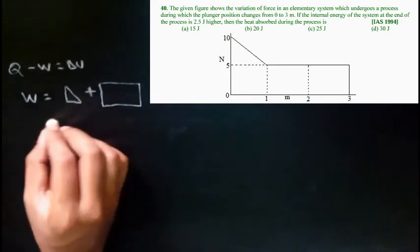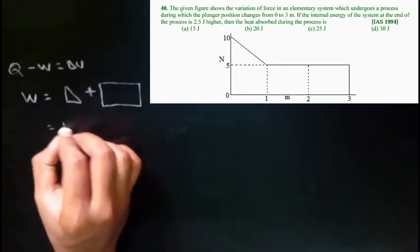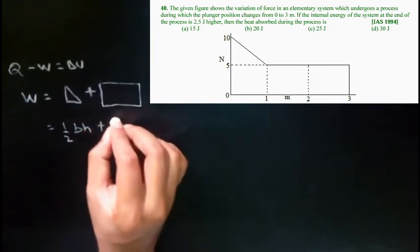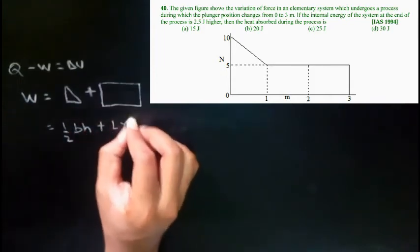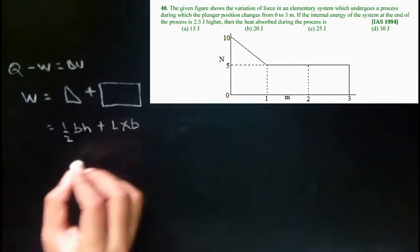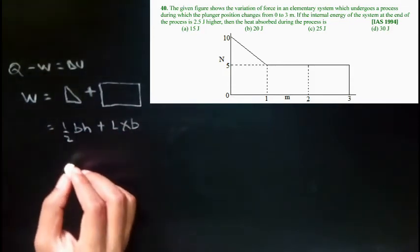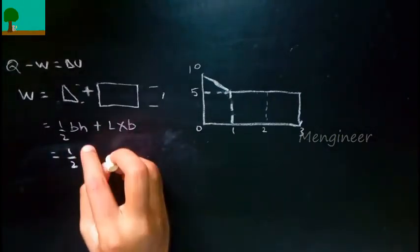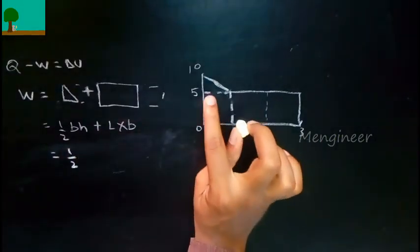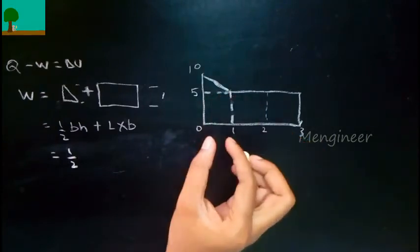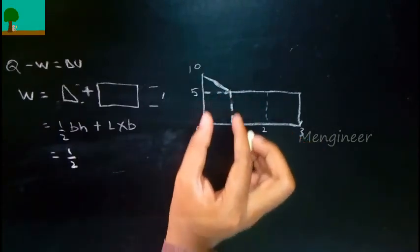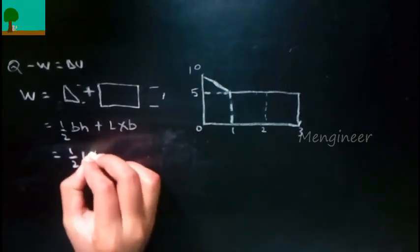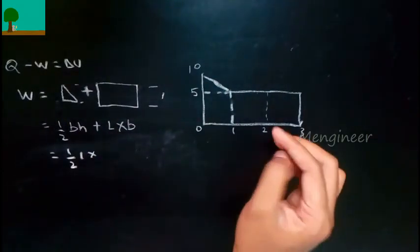To find the area, we have to consider all the areas so that we can find the work. The base of the triangle—these two bases are equal—so it is 1, and the height is 5.